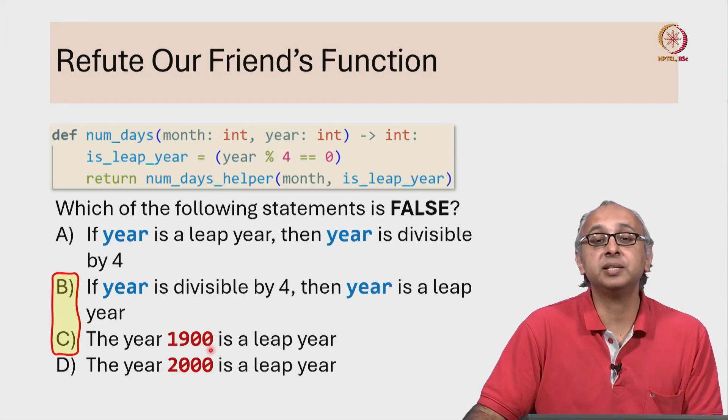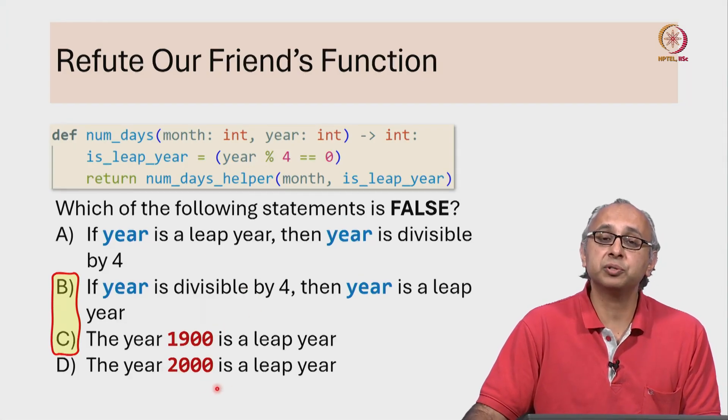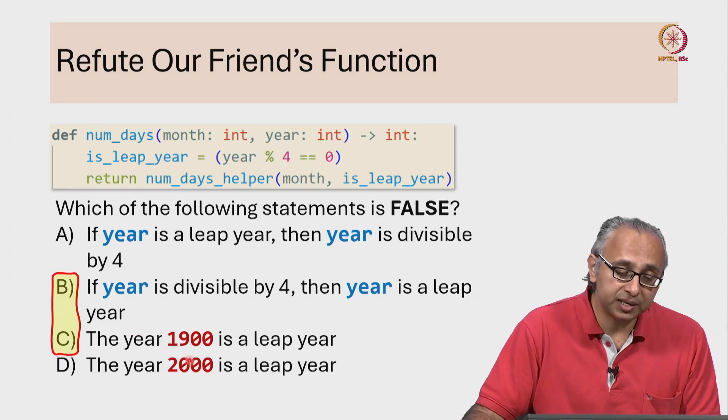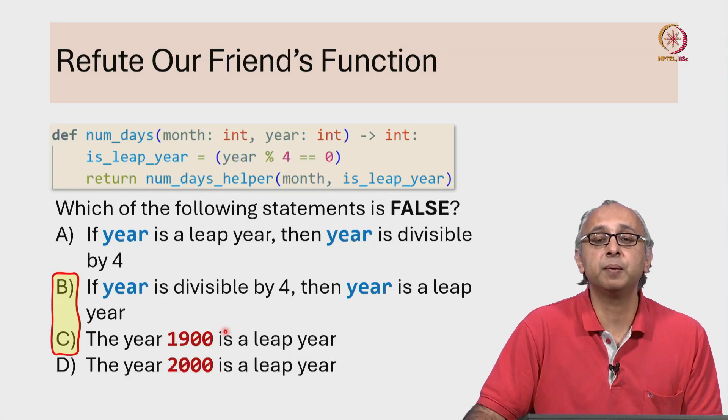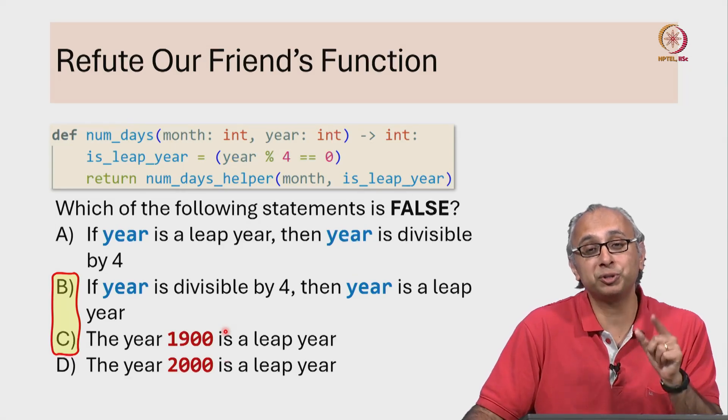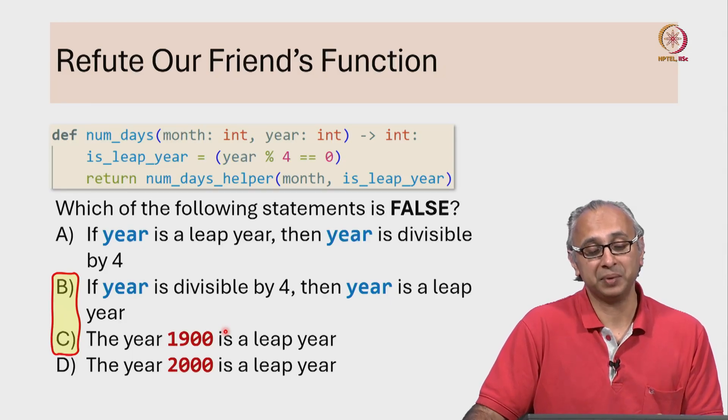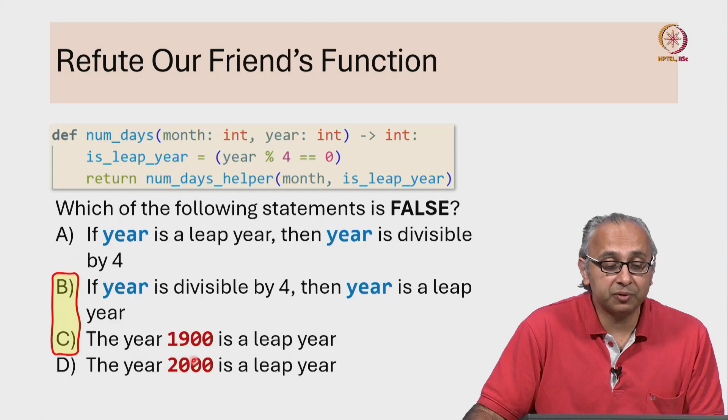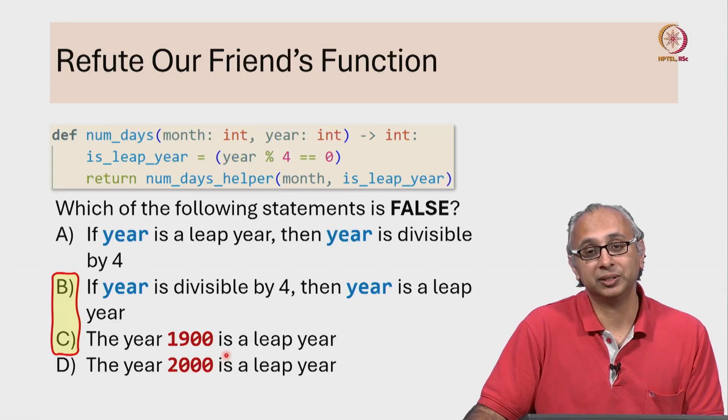And years like 1900 and years like 2000 are divisible by 100 but there is a difference here. We have to check that amongst years that are divisible by 100, are they also divisible by 400 because only those years are leap years. And 2000 is a leap year but 1900 is not a leap year.